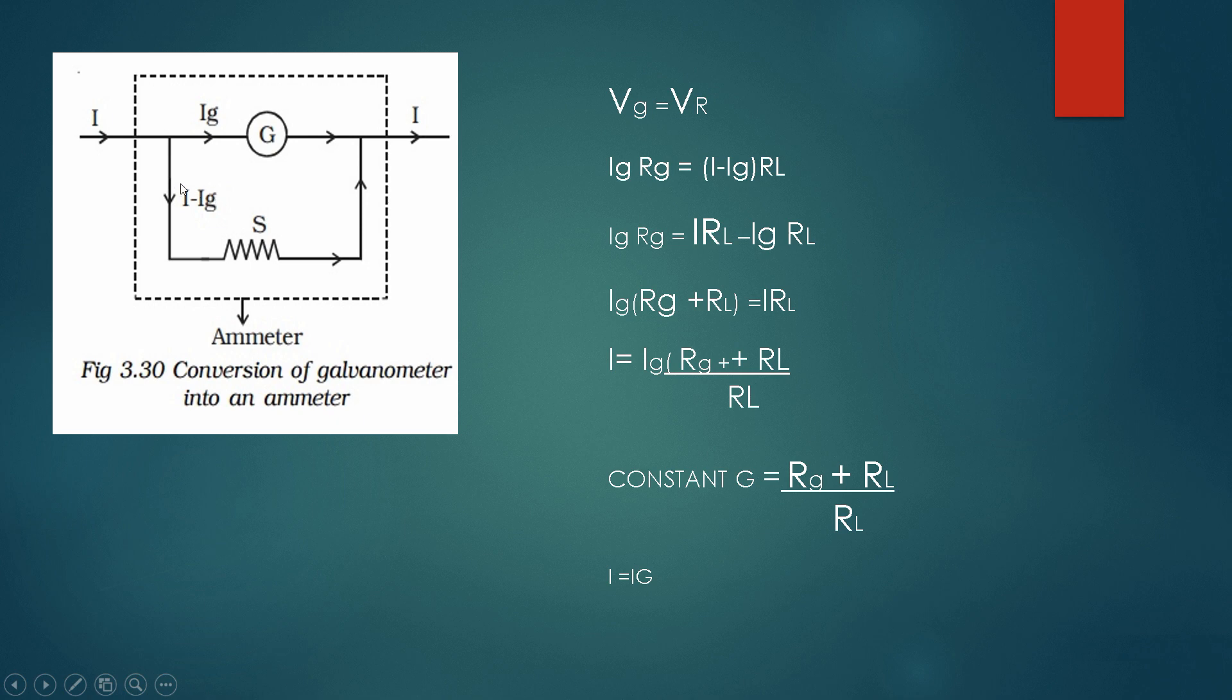So that's why it is written as I minus IG, because our input supply is 10 amps and 1 ampere current is flowing through here. So 10 minus 1 equals 9 amps. So 9 amps current flows through here. That's why we are taking I minus IG.